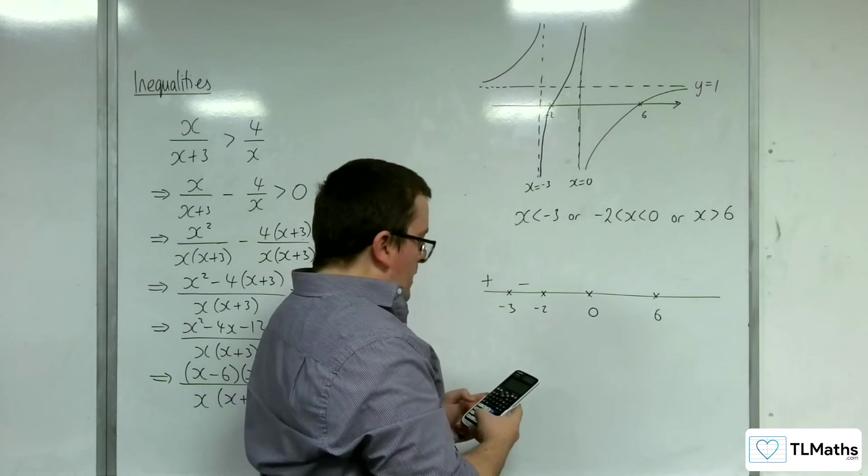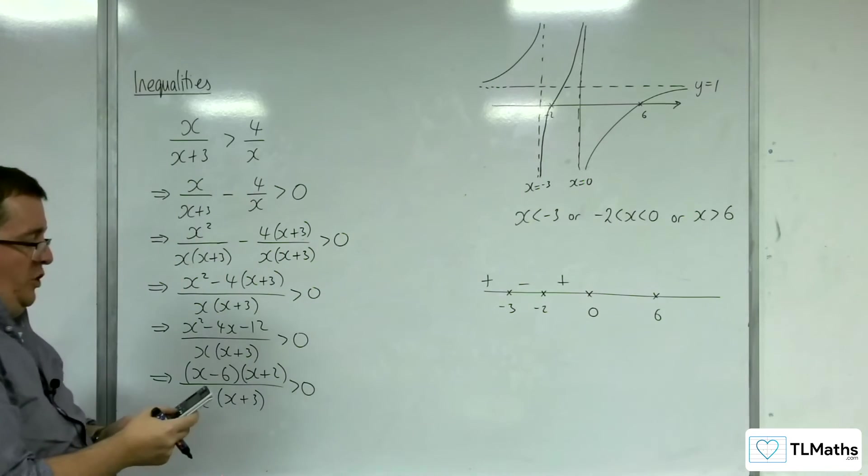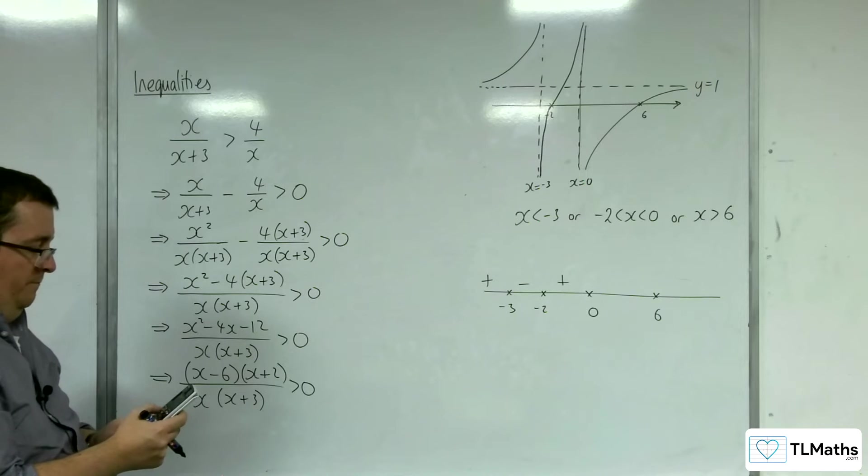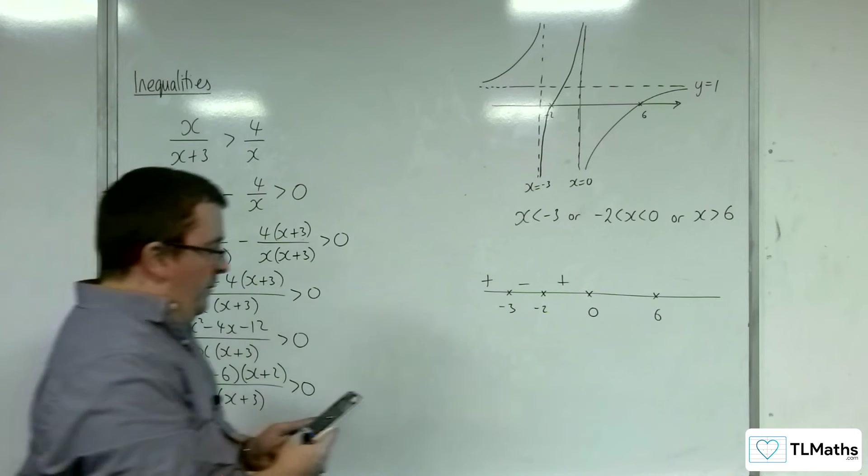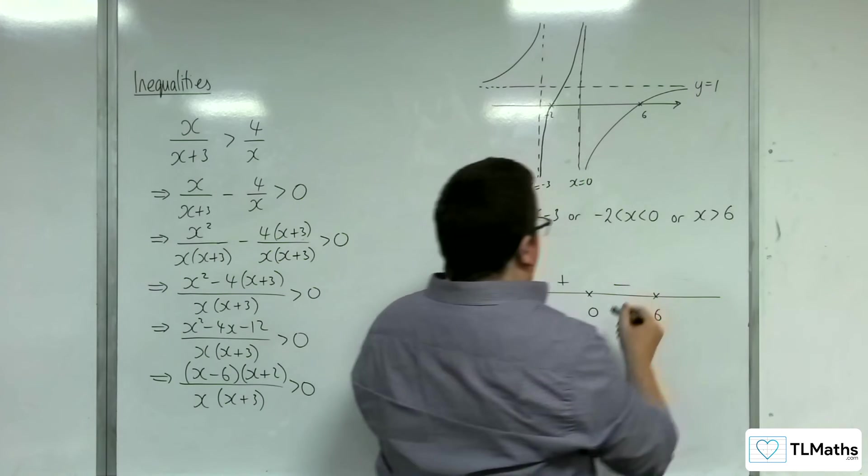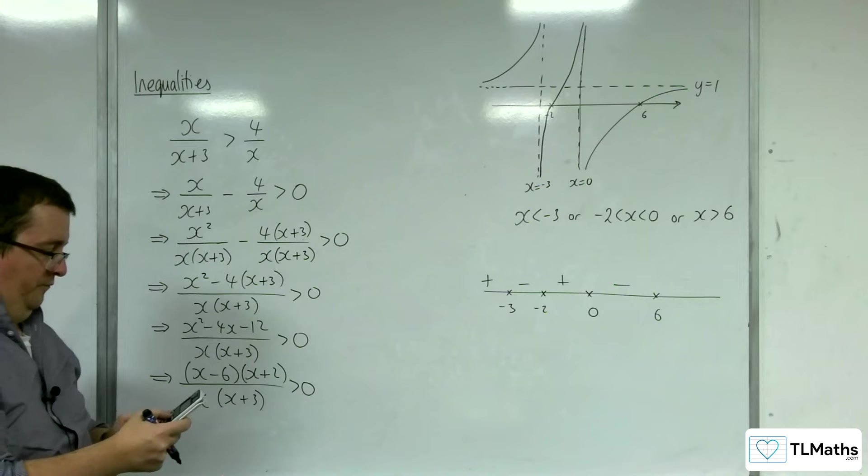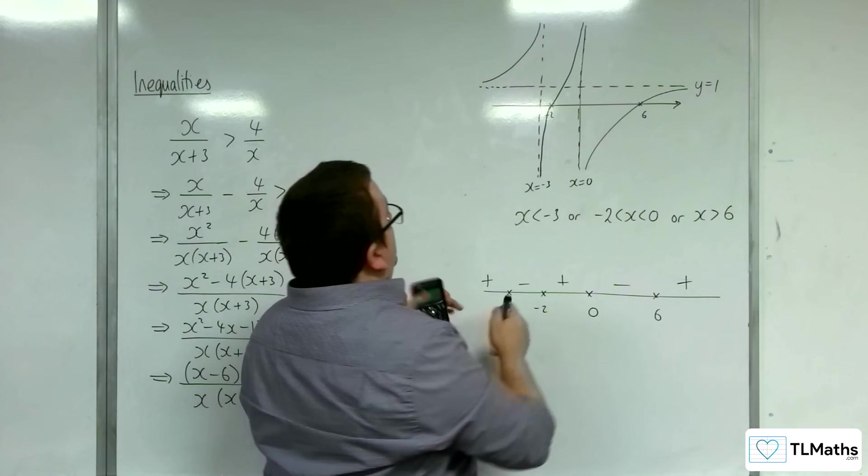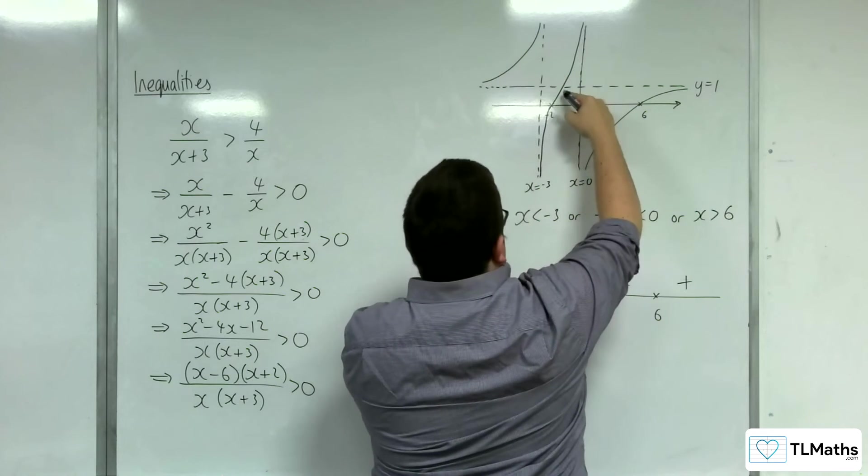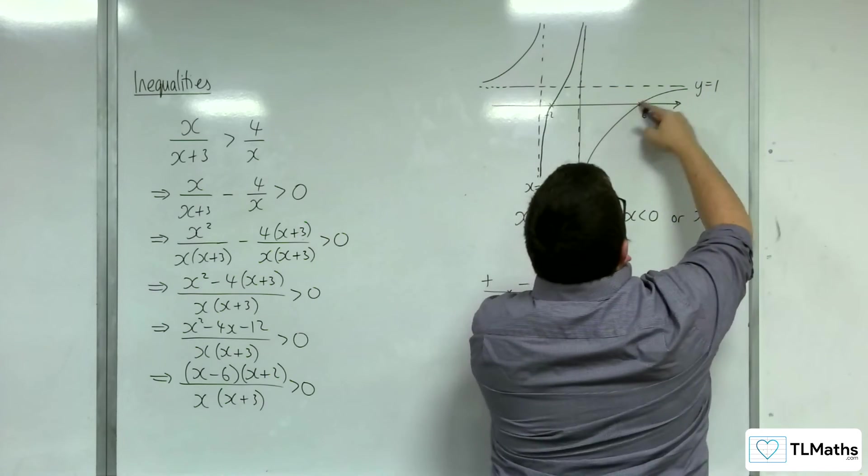Minus 1, and we get 7 halves. So it's positive there. Then I'm going to substitute in 1 for the next region. And we get minus 15 quarters. So it's negative there. And I'm going to substitute in 7 for the last region. And we get 9 over 70. So positive. So positive, negative, positive, negative, positive.